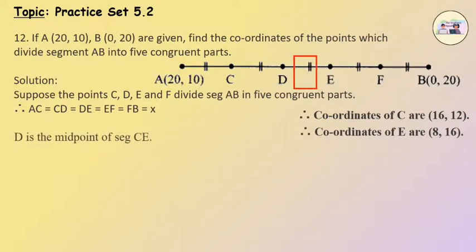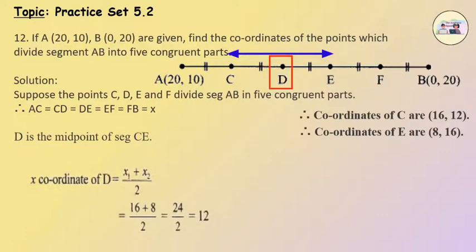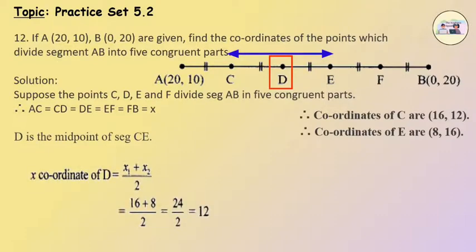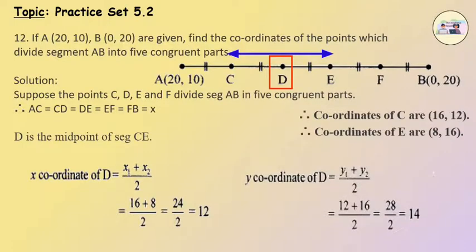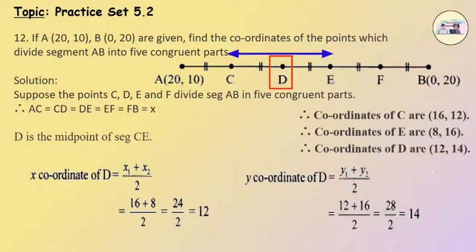D is the midpoint of segment CE. Therefore, the x-coordinate of D equals x1 plus x2 upon 2, which equals 16 plus 8 upon 2, which equals 24 upon 2, which equals 12. The y-coordinate of D equals y1 plus y2 upon 2, which equals 12 plus 16 upon 2, which equals 28 upon 2, which equals 14. Therefore, the coordinates of D are (12, 14).